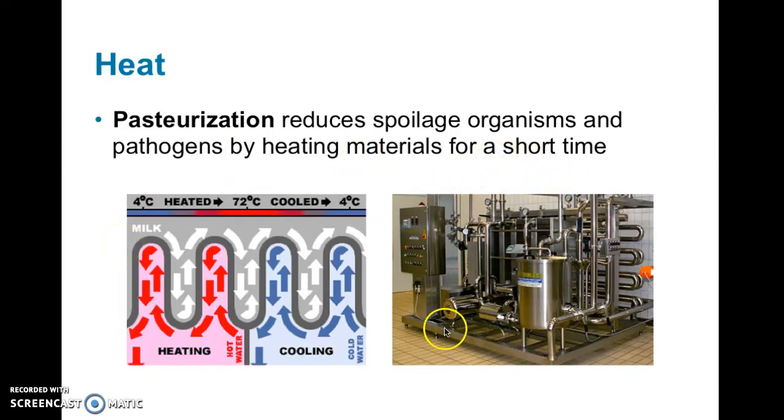So here's an example. This is what a pasteurization machine looks like. It has all kinds of tubes and pipes and tanks going all over the place, but the basic layout is this. So here in the gray, this is the thing that you want to disinfect. So in this case, it's milk. It could be juice or some other liquid. It runs through pipes that go next to hot water pipes. So that heats it up for a certain amount of time, and then it is run next to cold water pipes to cool it down, and it just runs in a cycle of heating and cooling to target those spoilage or pathogen organisms.